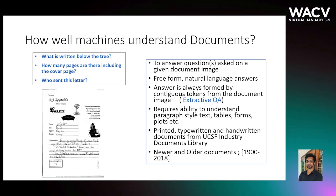To fare well in this task, algorithms need the ability not only to read and understand text, but also to understand the structure of the documents. We use documents from the UCSF Industry Documents Library, and our documents span almost a century, as early as the 1900s and as recent as 2018.